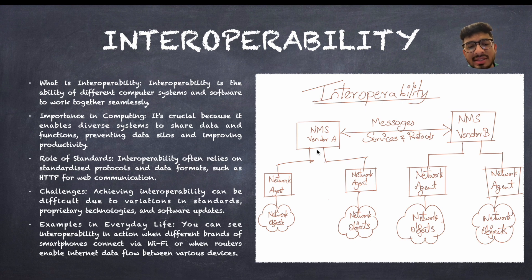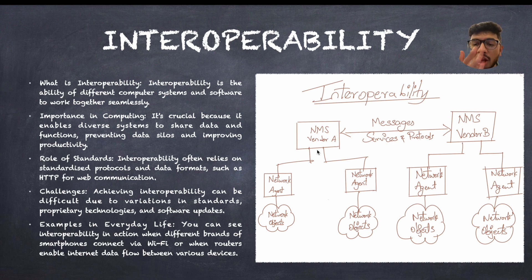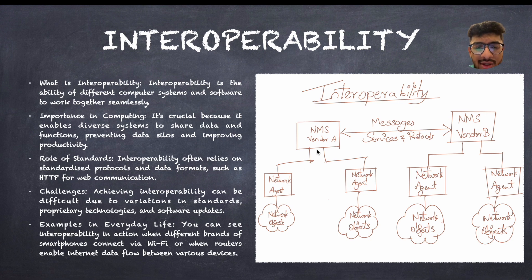So what importance does interoperability have in computing? It is very crucial because it enables diverse systems to share data and functions, preventing data silos and improving productivity. Data silos means there will be no corruption or barrier between both or many vendors.